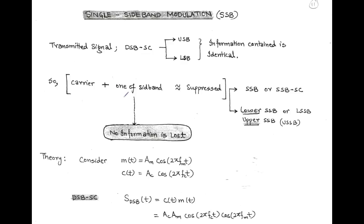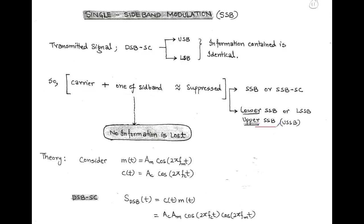Since the information in both bands is identical, we can suppress one of the sidebands. This modification of standard AM involves suppression of the carrier and one of the sidebands. In this technique, there is no information lost, and this technique is called SSB or SSB-SC. Based on which sideband is suppressed, SSB may be called lower SSB or upper SSB.